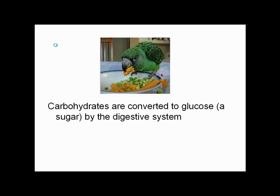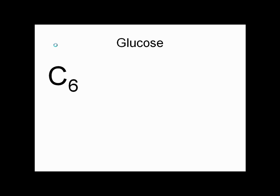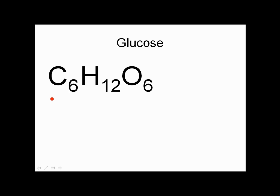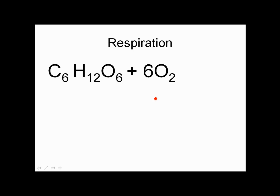An organism eats food and the digestive system converts most of the carbohydrates to a sugar, usually glucose. Glucose has six atoms of carbon, so we use the subscript C6. It's combined as a carbohydrate with hydrogens — C6H12 — and there's also oxygen in it, so the whole glucose molecule looks like C6H12O6. When it gets inside your system, you oxidize it through respiration by adding six molecules of free oxygen, that's 6O2.